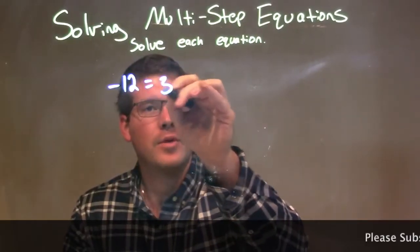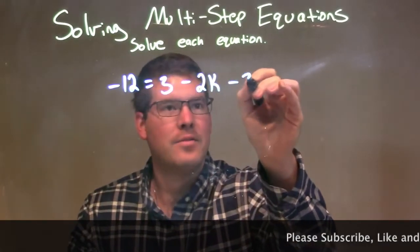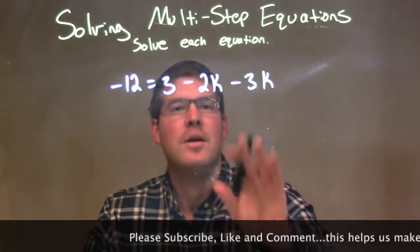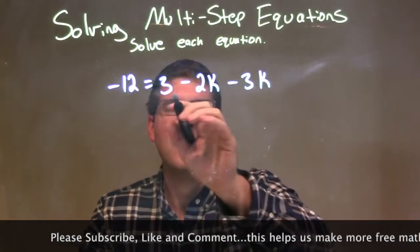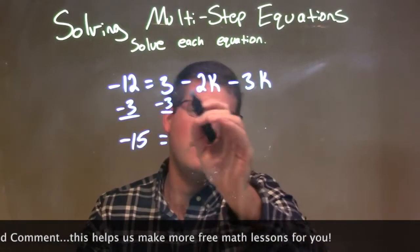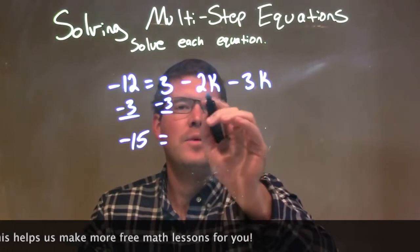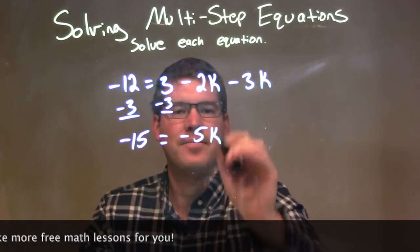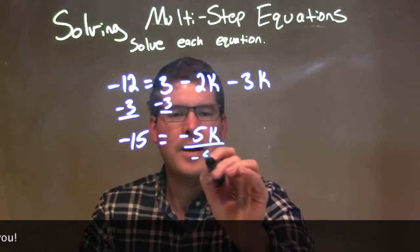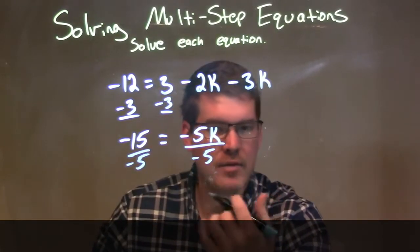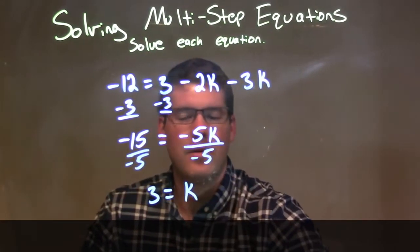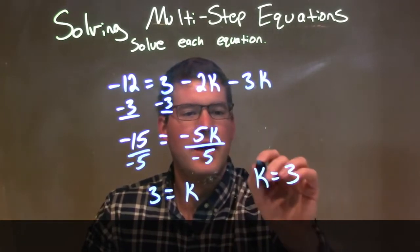Negative 12 equals 3 minus 2k minus 3k. I want to bring my like terms together: variables on the right, numbers to the left. I'm going to subtract 3 from both sides. Negative 12 minus 3 is negative 15. And we can combine negative 2k minus 3k, which is negative 5k. Now we have multiplication between negative 5 and k — opposite is division. Divide by negative 5 on both sides: negative 15 divided by negative 5 is positive 3. Our final answer is k equals 3.